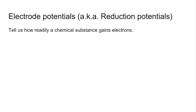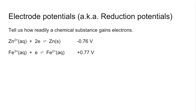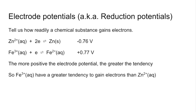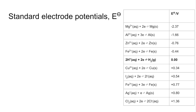Moving on to electrode potentials, also known as reduction potentials — these tell us how readily a chemical substance gains electrons (reduction is the gain of electrons). The Zn²⁺/Zn half cell has an electrode potential of −0.76 V, whereas the Fe³⁺/Fe²⁺ half cell has +0.77 V. The more positive the electrode potential, the greater the tendency to gain electrons, so Fe³⁺ ions have a greater tendency to gain electrons than Zn²⁺ ions.